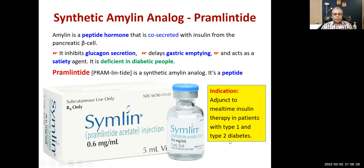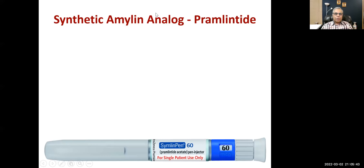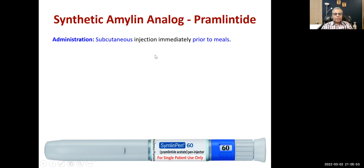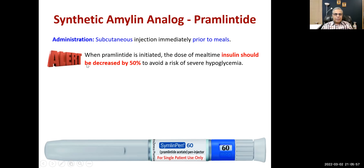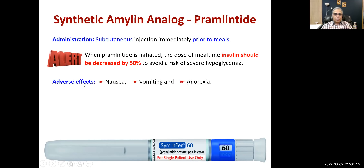Pramlintide supplements the action of insulin but we have to be careful because there is a risk of hypoglycemia. It is a synthetic amylin analog; administration is subcutaneous, immediately prior to meals. An important alert: when pramlintide is initiated, the dose of mealtime insulin should be decreased by 50 percent to avoid severe hypoglycemia. Adverse effects are nausea, vomiting, and anorexia.